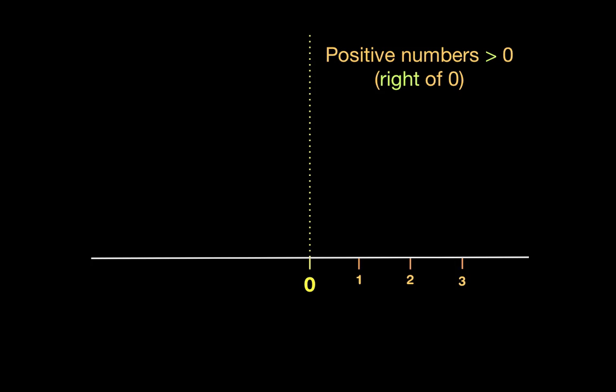For example, positive one, positive two, positive three, and you can continue: positive four, positive five, and so on. Any number that is on the left of zero, or in other words less than zero, will be a negative number: negative one, negative two, negative three, and so on.